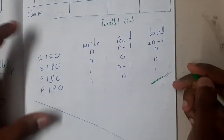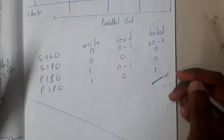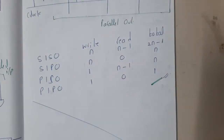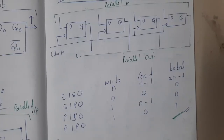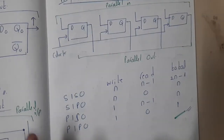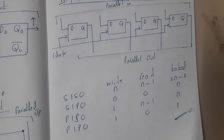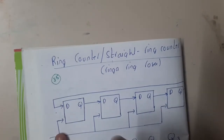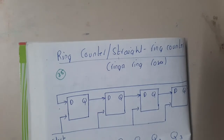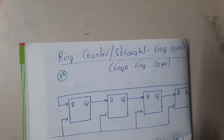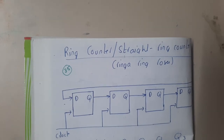For Parallel In Parallel Out, it takes 1 clock to push all bits in and 0 clocks to read all bits out. The final summary table covers all four modes and their clock requirements — you should be clear with this concept. In the next lecture, we will discuss the ring counter. Thanks for watching — like, share, and subscribe.